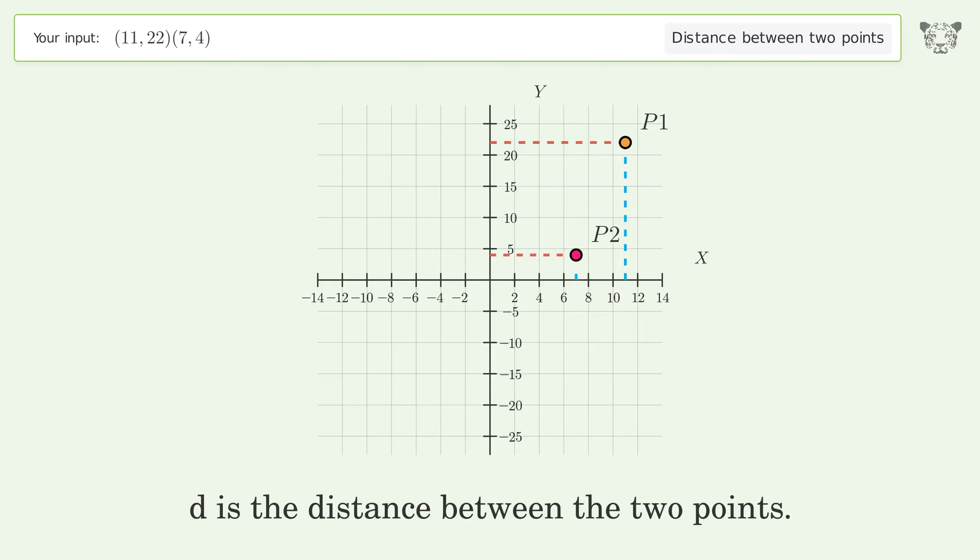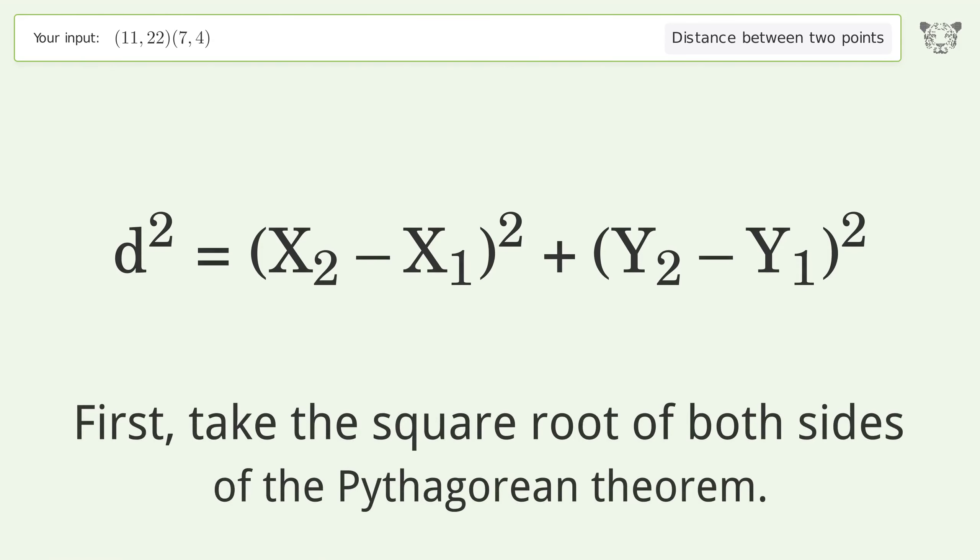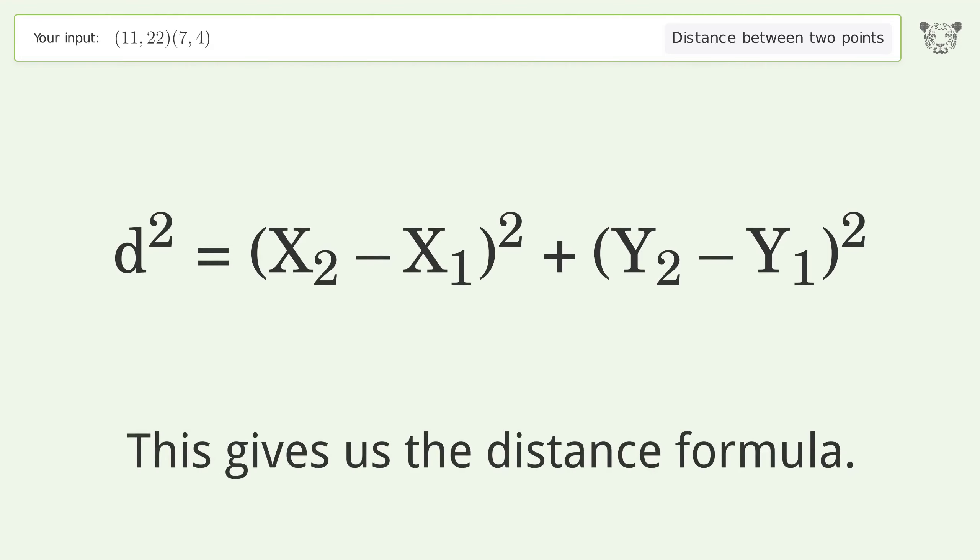d is the distance between the two points. First, take the square root of both sides of the Pythagorean theorem. This gives us the distance formula.